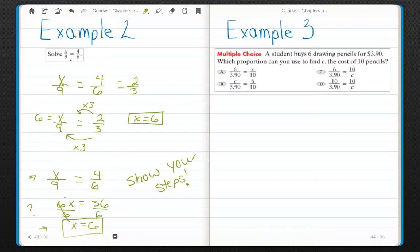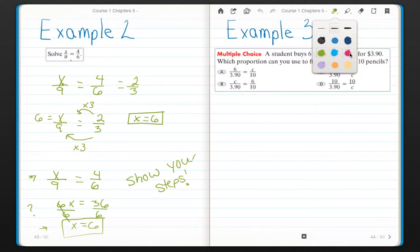A student buys 6 drawing pencils for $3.90. Which proportion can you use to find C, the cost of 10 pencils? So remember back in problem 1 where we had the same unit on top? In that case it was miles. Over the same unit in the denominator, which was gallons.